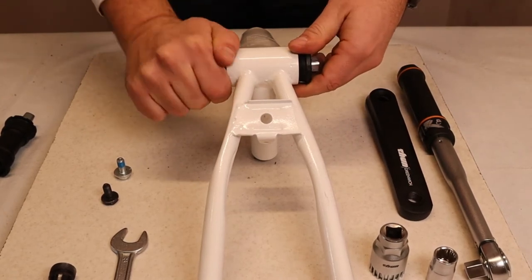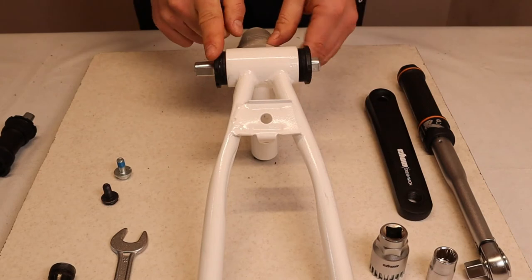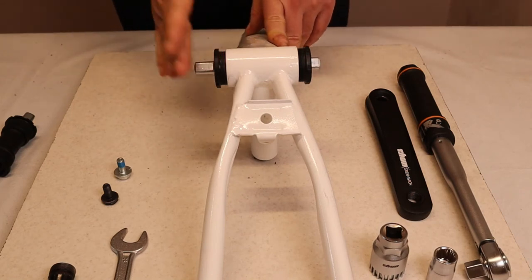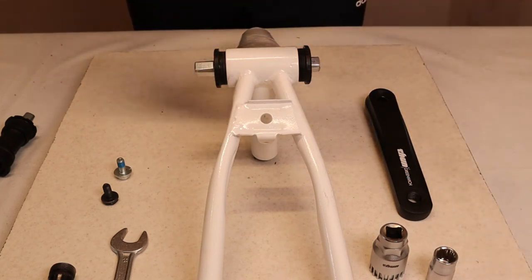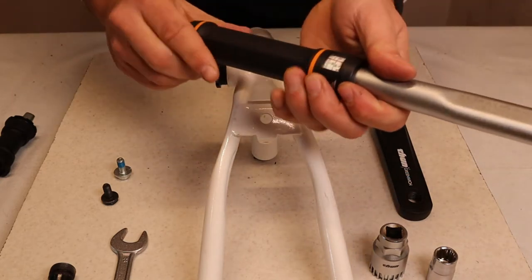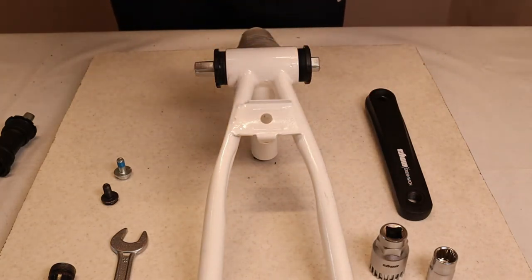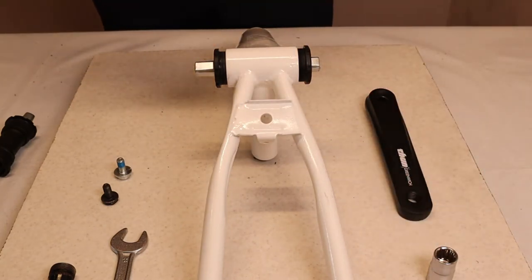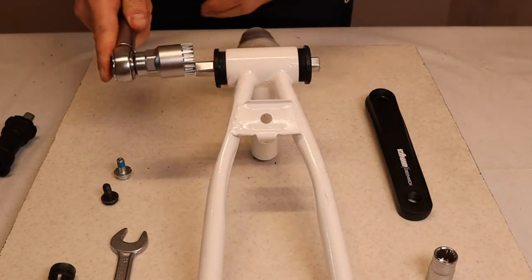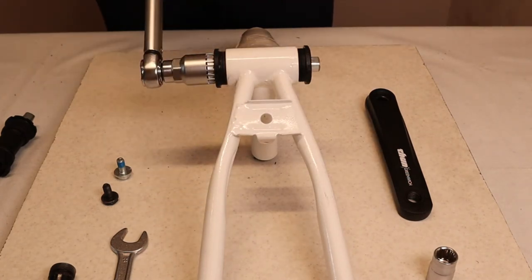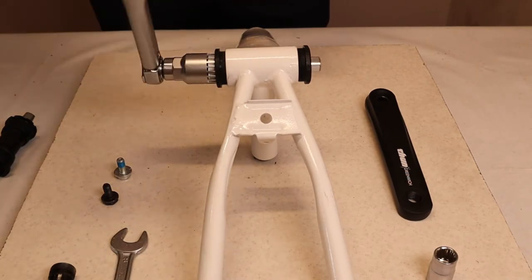So first you have to screw in the right side because it's important that the right side goes all the way in so the chain line will be perfect as specified in the size charts. So now we take a torque wrench. I will set it to 35 newton meters for this and we take the easy fit tool and then we will screw in the right cup.